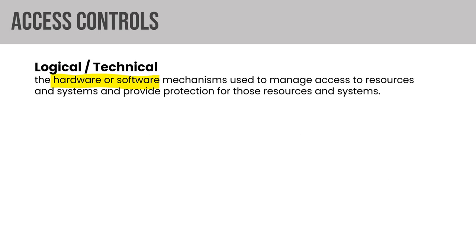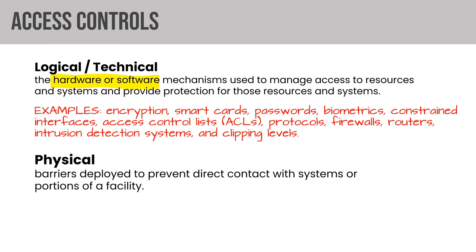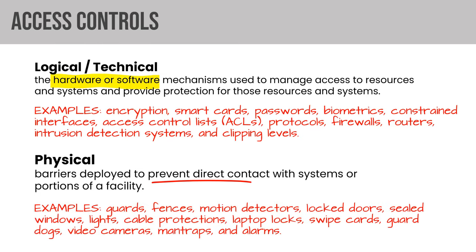Logical and technical controls are hardware or software mechanisms — technology applied to access control. Examples include smart cards, passwords, biometrics, intrusion detection, access control lists, and firewalls. Physical controls are intended to prevent direct contact with portions of a facility — examples include fences, bollards, man traps, locks, swipe cards, and guard dogs.